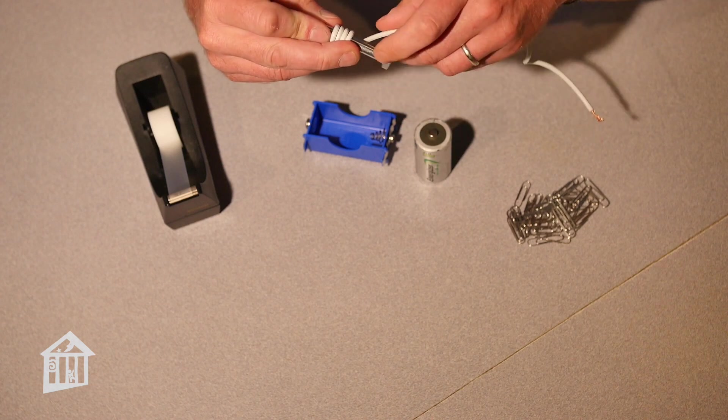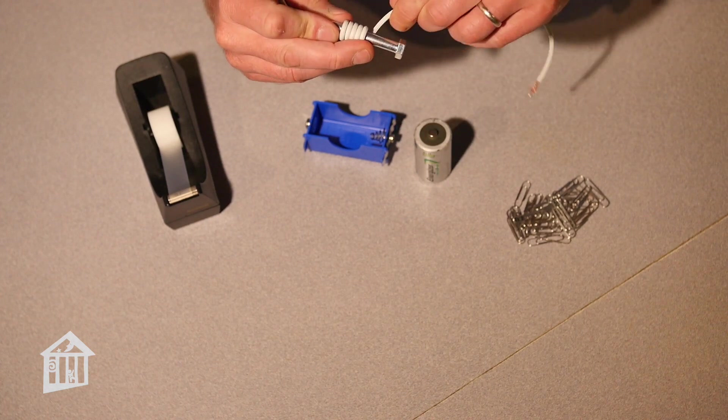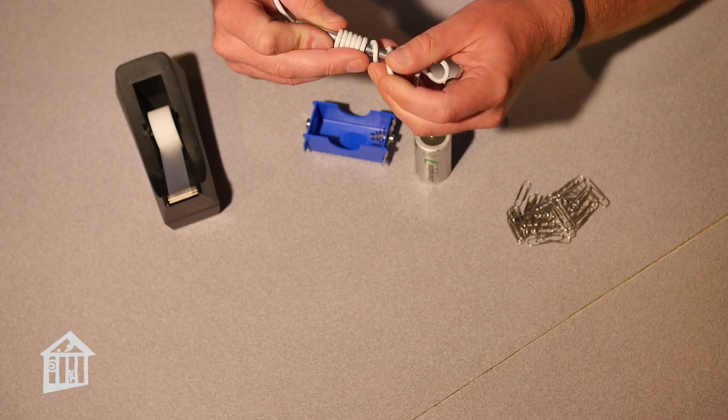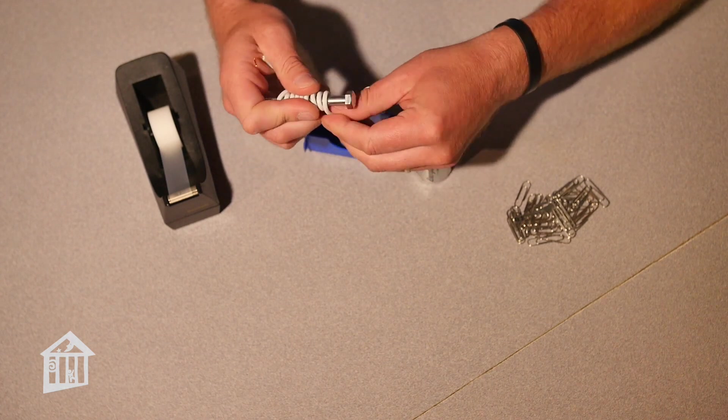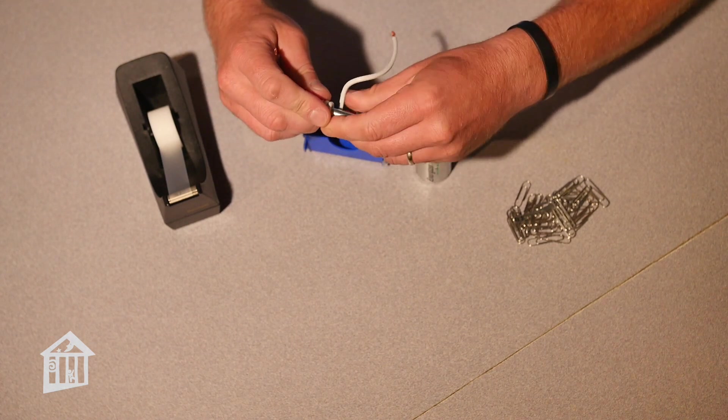An electromagnet is a temporary or artificial magnet, so it has a switch to turn it on or off. You want to coil the wire around the bolt until you have a couple of inches left.